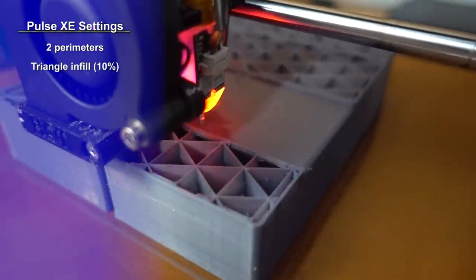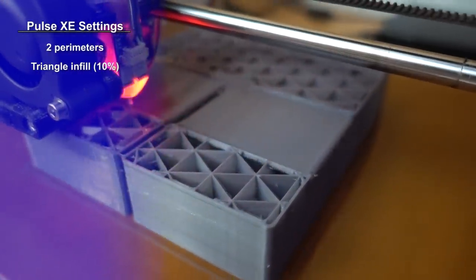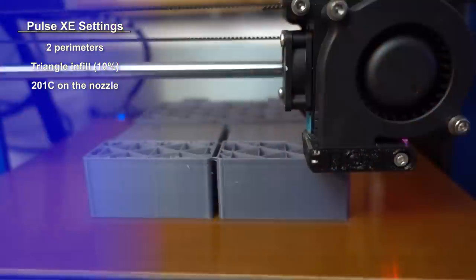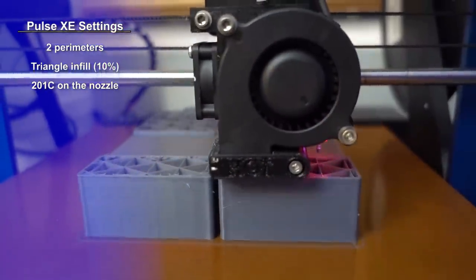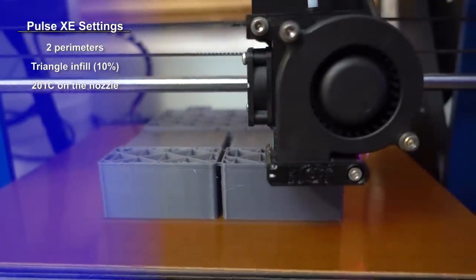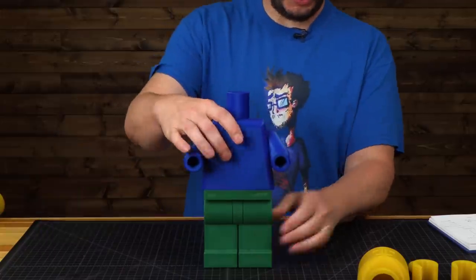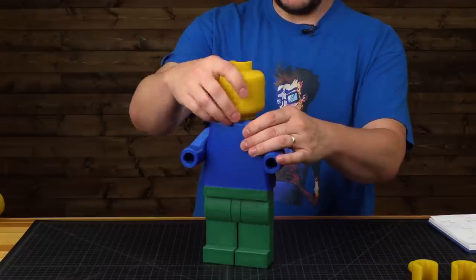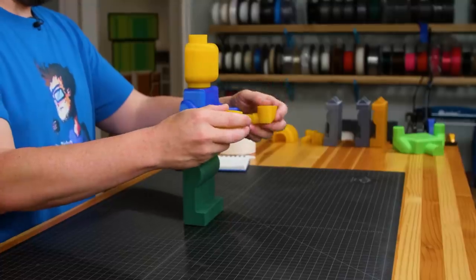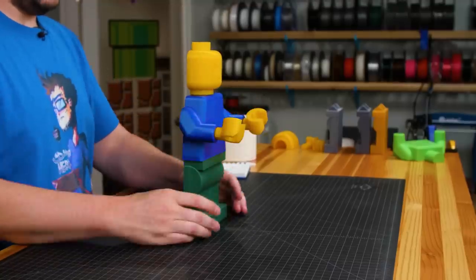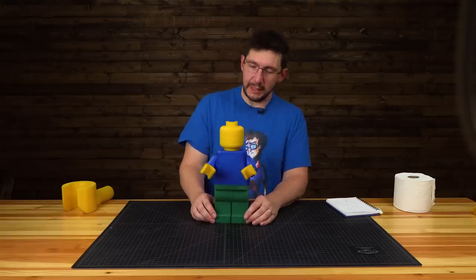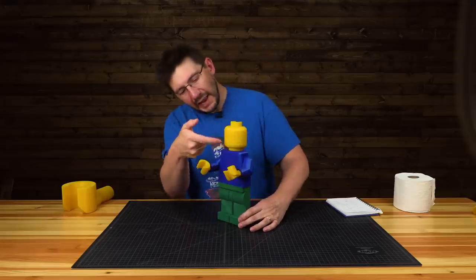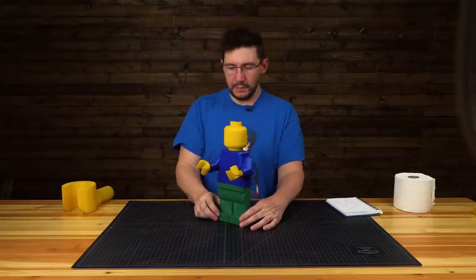Last and certainly not least, we have to talk about the pants. These were printed on the Pulse XE, two perimeters, triangle infill 10%, at 201°C on the nozzle. This is in Matter Hackers PLA, and this is the High Five Blue. This is what our Lego minifig looks like - it's fantastic.